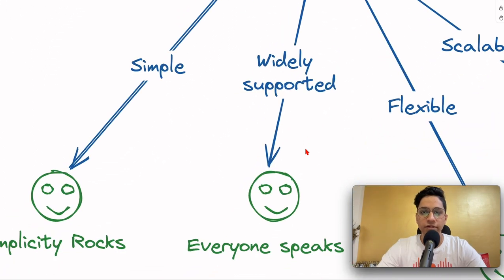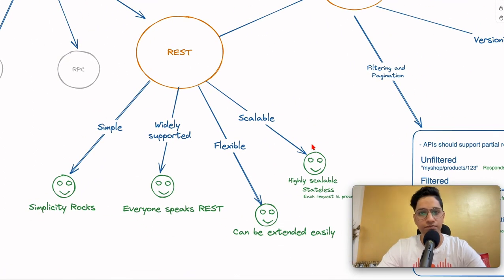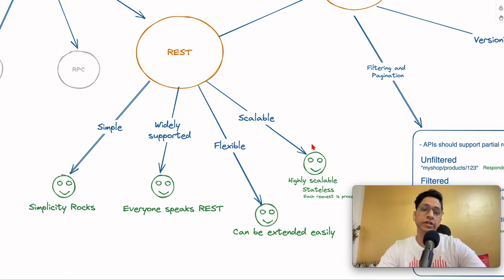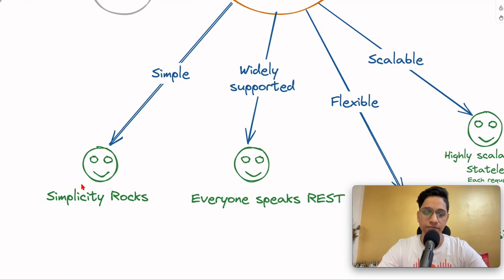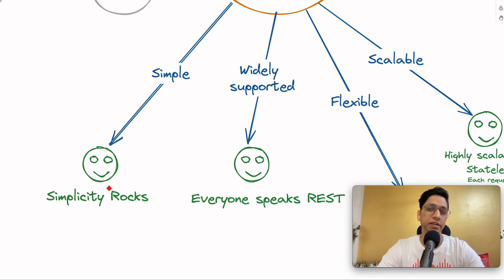There are some benefits we get when we deal with RESTful APIs. The number one benefit is its simplicity, because simplicity rocks. In this complicated world there are so many things we can complicate, and the best thing you can do as a developer is to create simple solutions. REST is really simple — it's simple to understand, simple to build, and simple to integrate with.